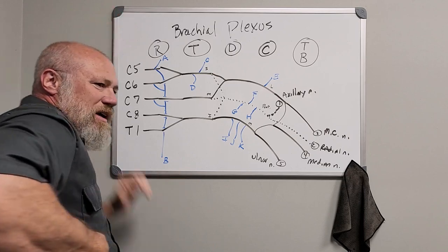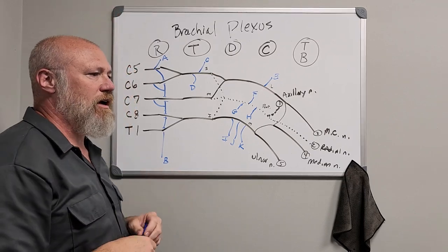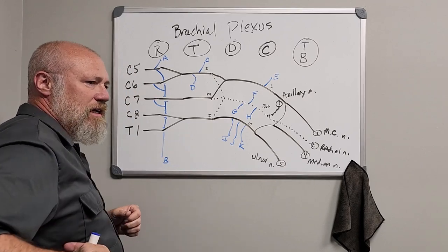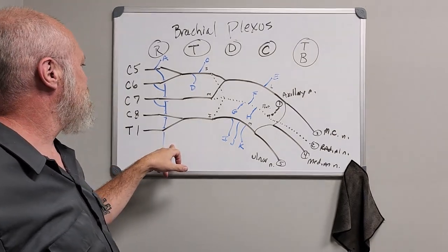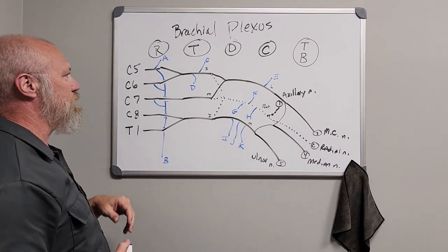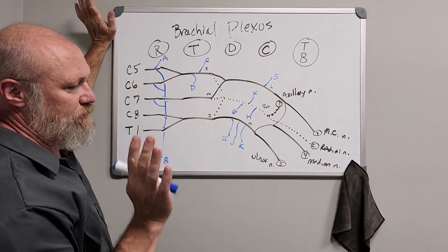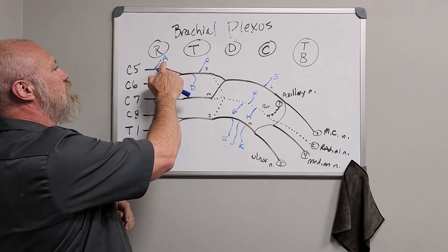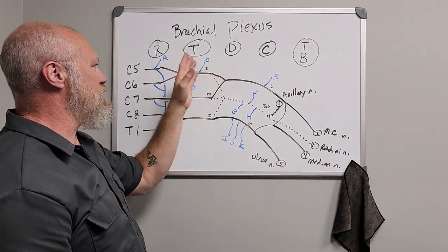Branch B is your long thoracic nerve, which innervates the serratus anterior muscle. It runs on the surface, which is one reason this area is so ticklish and susceptible to injury — a well-delivered strike in this area can incapacitate the long thoracic nerve, inhibiting or completely incapacitating the serratus anterior and the ability to stabilize the scapula.